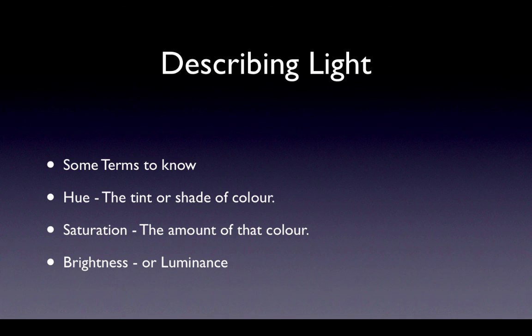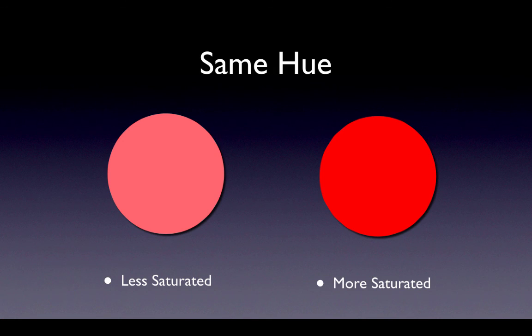There are some specific terms to know about describing light. The term hue means the actual tint or shade of the color of the light. Saturation is the amount of that color. And the brightness of the light is also known as the luminance of the light. For example, these two circles are exactly the same hue, but they are different colors, because the one on the right is more saturated than the one on the left.